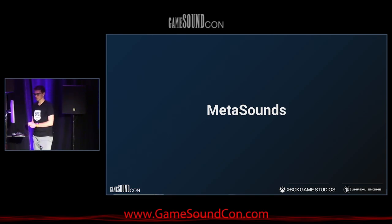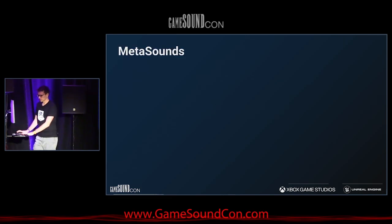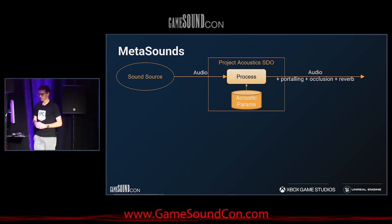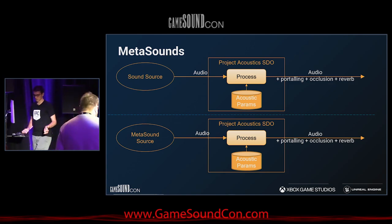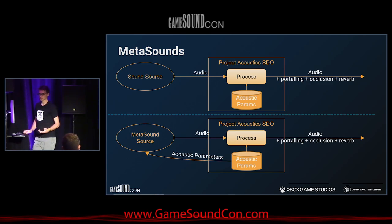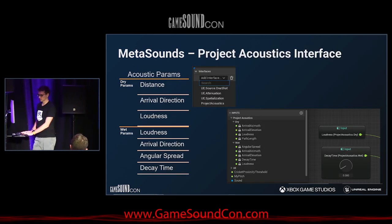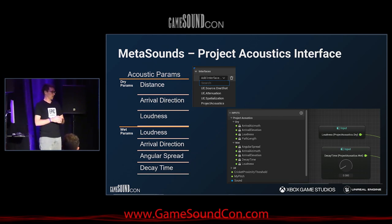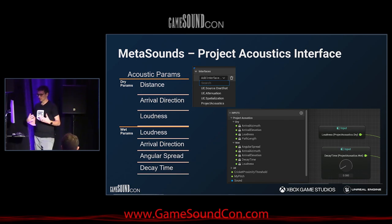Next, MetaSounds — a cool experiment we added. Normally, your sound source sends audio through our Project Acoustics plugin and we add portaling, occlusion, and reverb. A MetaSounds source works the same way. But what if you wanted to use Project Acoustics acoustic parameters directly within your MetaSound logic? That's now possible — we can inject acoustic parameters into your MetaSound as an interface. Project Acoustics is now a new MetaSound interface when you use our plugin, so you can receive the latest acoustic parameters as the scene progresses.